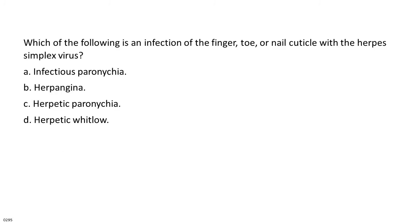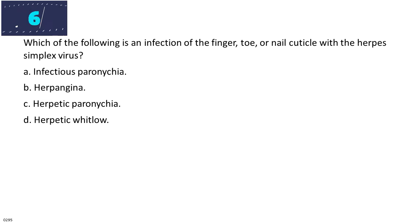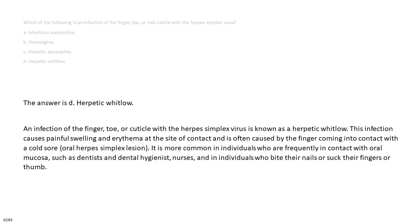Which of the following is an infection of the finger, toe, or nail cuticle with the herpes simplex virus? A. Infectious paronychia. B. Herpangina. C. Herpetic paronychia. D. Herpetic whitlow. The answer is D. Herpetic whitlow. An infection of the finger, toe, or cuticle with the herpes simplex virus is known as a herpetic whitlow. This infection causes painful swelling and erythema at the site of contact and is often caused by the finger coming into contact with a cold sore or oral herpes simplex lesion. It is more common in individuals frequently in contact with oral mucosa, such as dentists, dental hygienists, nurses, and in individuals who bite their nails or suck their fingers or thumb.